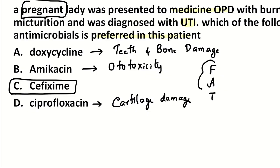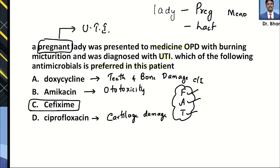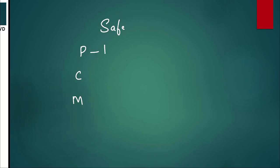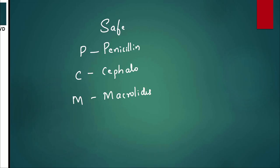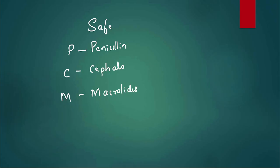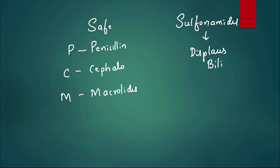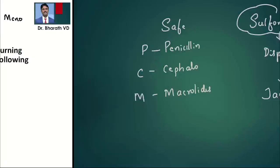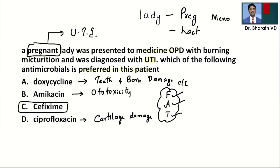Remember, drugs contraindicated in pregnant women are called FAT: Fluoroquinolones, Aminoglycosides, Tetracyclines. Safe antibiotics in pregnant women — remember the mnemonic PCM: P for penicillins, C for cephalosporins, M for macrolides such as azithromycin and erythromycin. Sulfonamides are not teratogenic but are avoided in pregnant women because in the third trimester they can displace bilirubin, causing jaundice and kernicterus in the fetus. So the answer is C — cefixime, which is a cephalosporin.